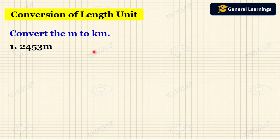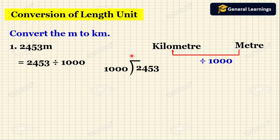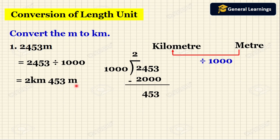Now we will see how to convert meters to kilometers. We know that while converting meters to kilometers we need to divide by 1000. Here they have given 2453 meters. So we divide 2453 by 1000: 1000 goes into 2453 twice giving 2000, so we write 2 in the quotient, subtract 2000 from 2453, leaving 453. So 2 is 2 kilometers and 453 is 453 meters. While converting 2453 meters we get 2 kilometers 453 meters. I hope you understand how to convert length units.